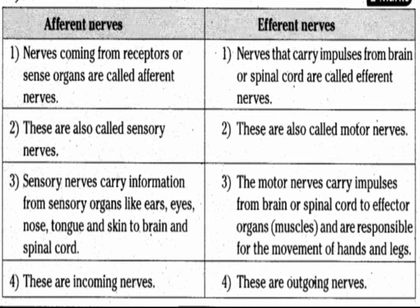Efferent neurons are basically called motor neurons. These are outgoing neurons that carry information from the central nervous system to the peripheral nervous system. The central nervous system comprises the brain and spinal cord, while the peripheral nervous system comprises sensory organs like eyes, nose, tongue, muscles, blood vessels, and glands.